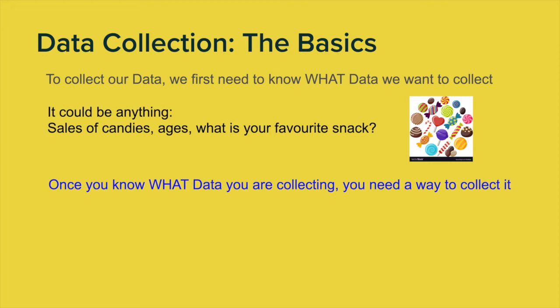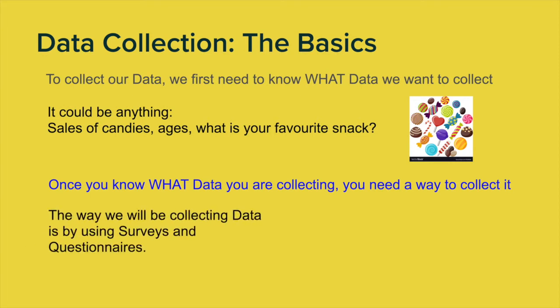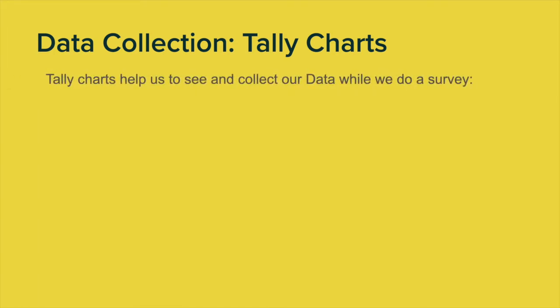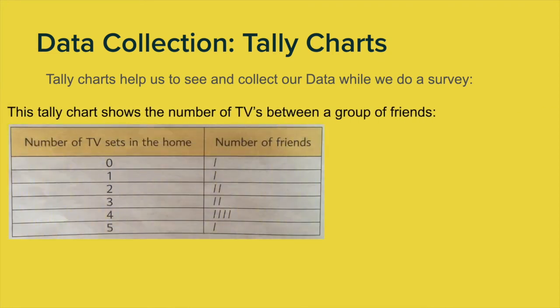Now, where are you collecting your data from? You're collecting it from people. We can collect data using surveys and questionnaires — you've all done a questionnaire or survey in the past, so it should be fairly simple. That is how we're going to get our data. To record our data, we're going to use something called a tally chart. Tally charts help us see and collect our data during the survey, getting our information into a kind of graph or table.